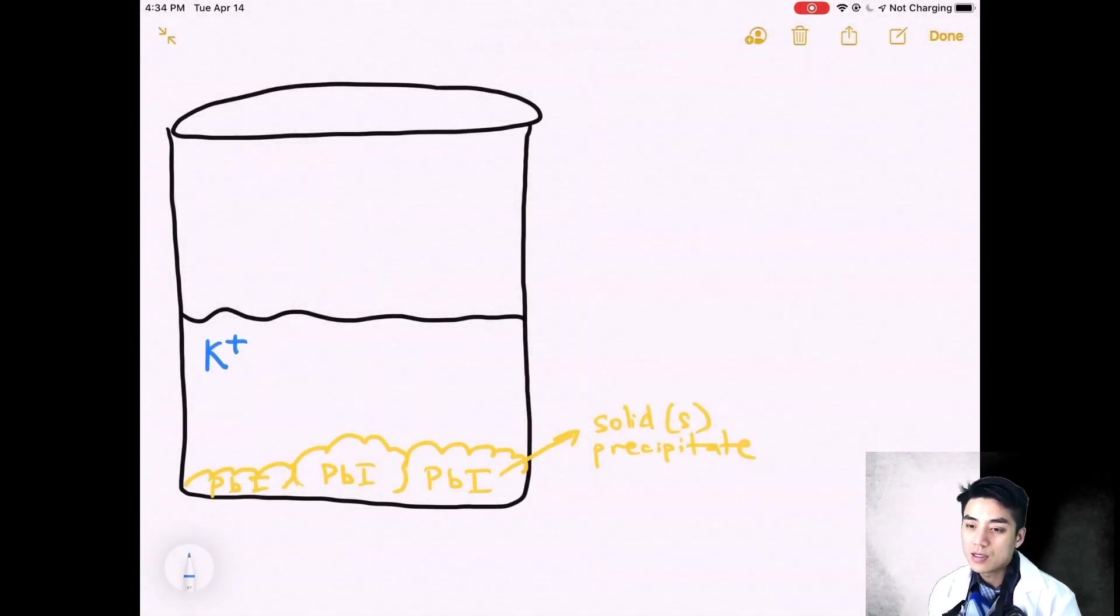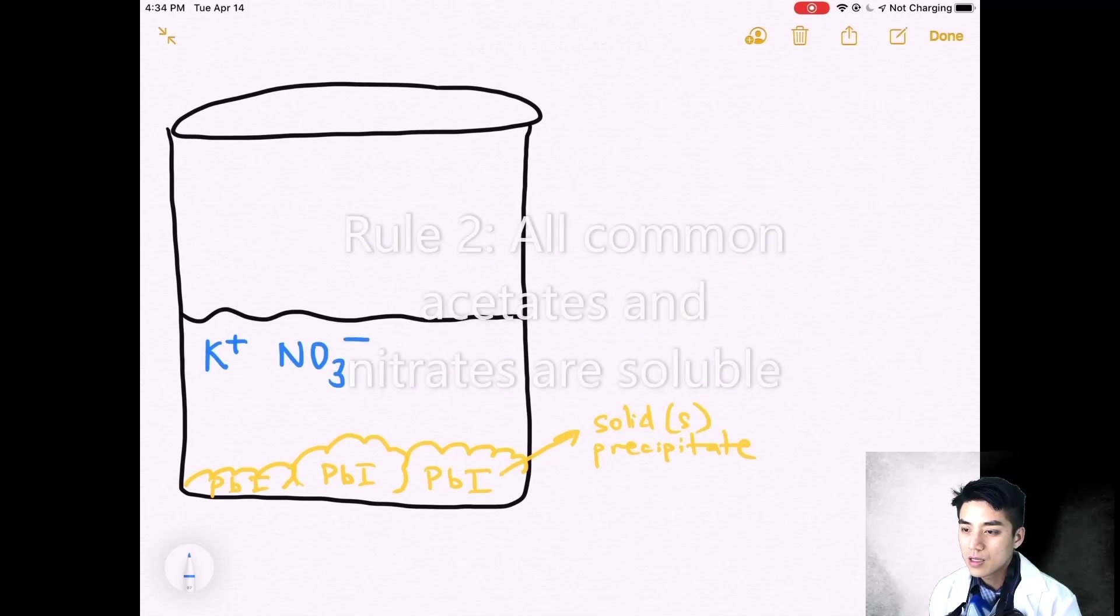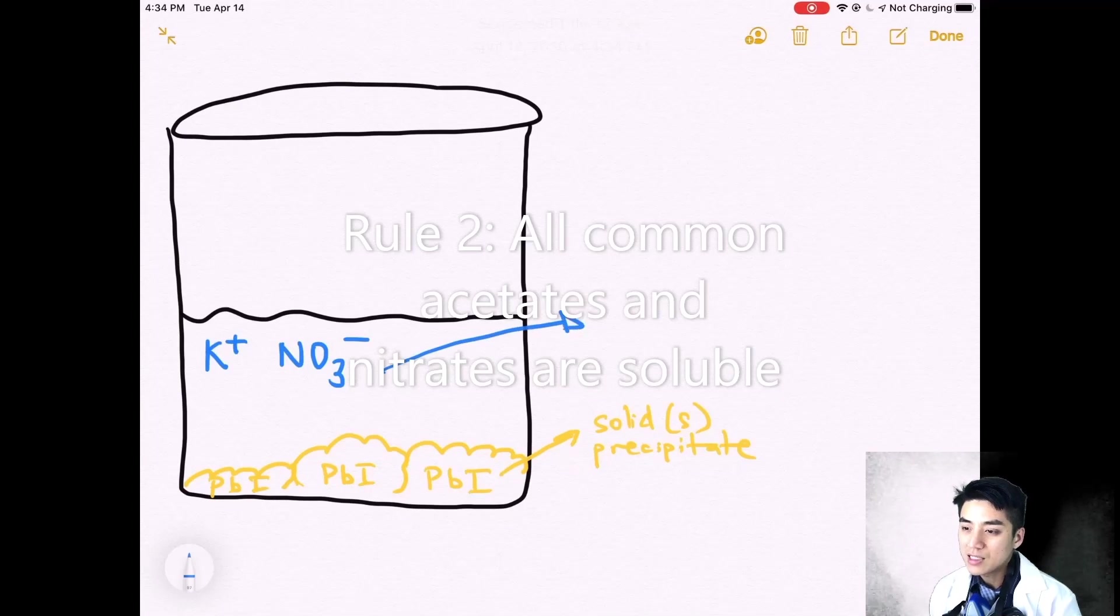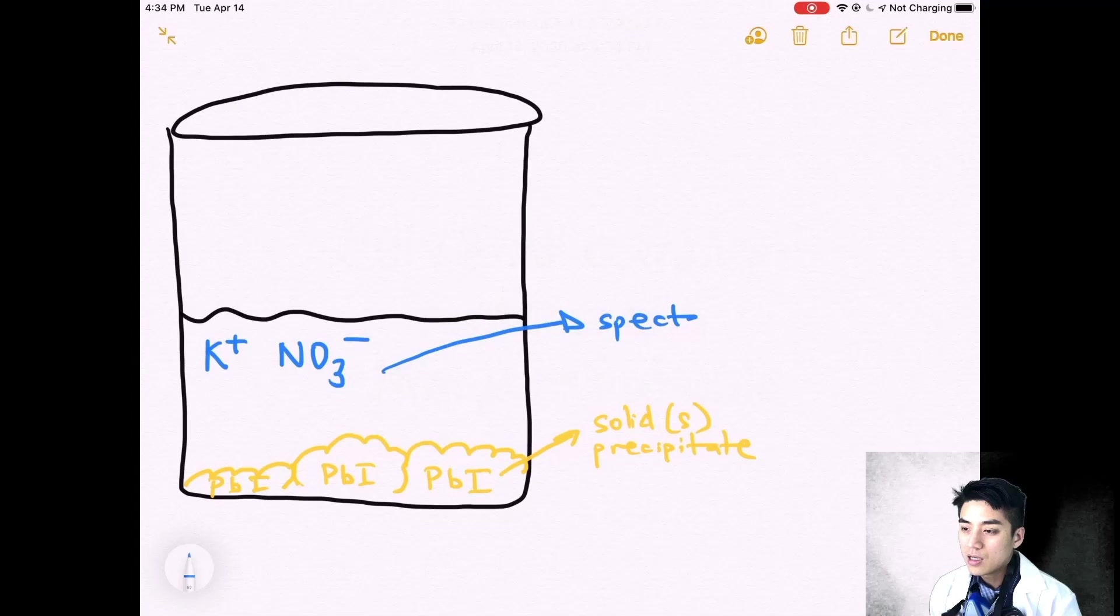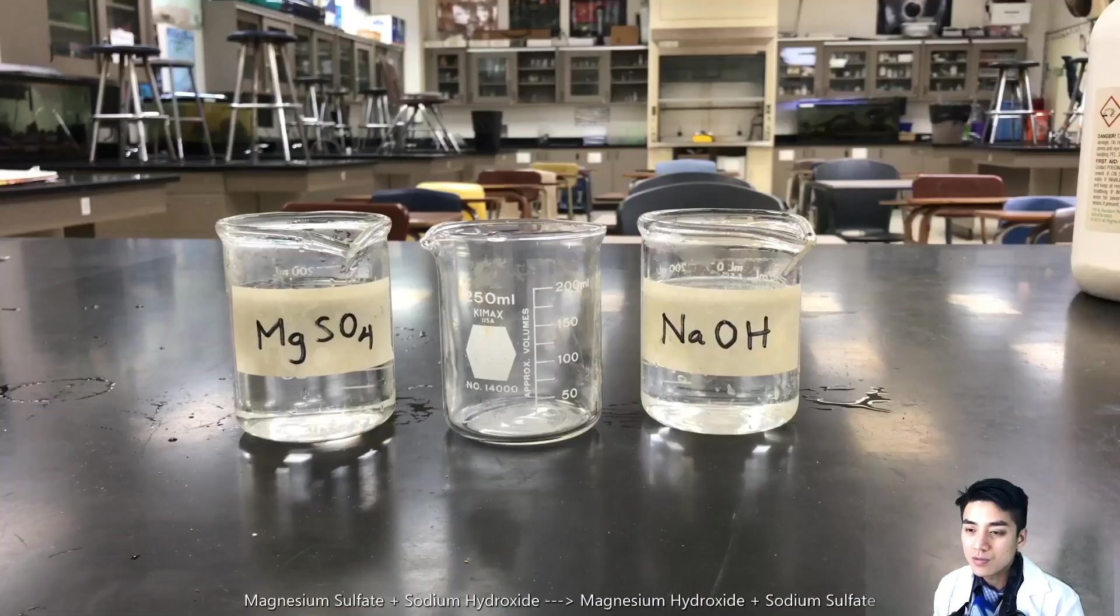Next up is potassium nitrate. By rule two it says all common acetates and nitrates are soluble, so this will dissolve in water. When it dissolves in water it's called the spectator ion because it kind of just watches the reaction. It doesn't contribute to making the solid. That's where the name comes from.